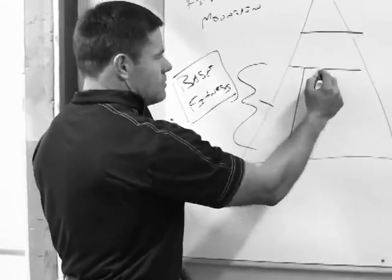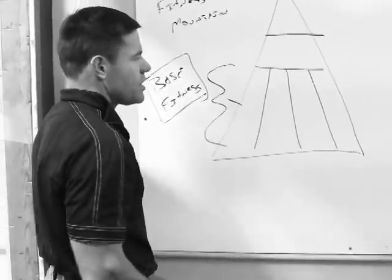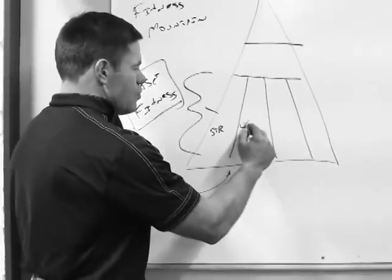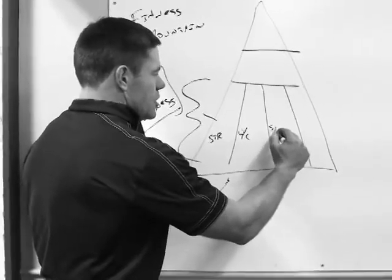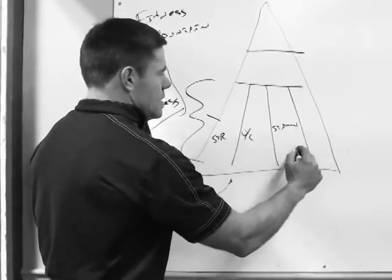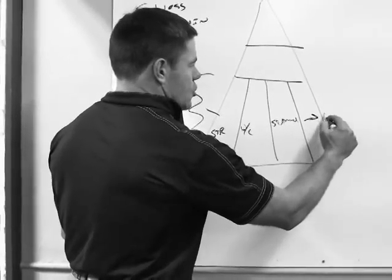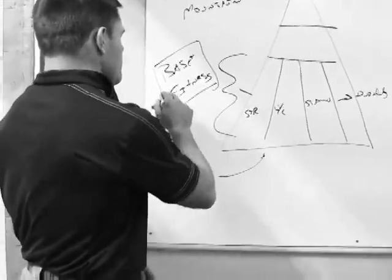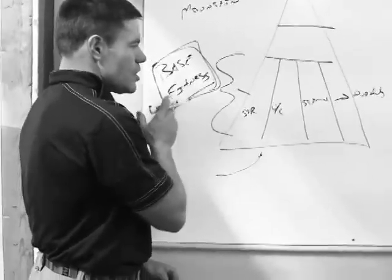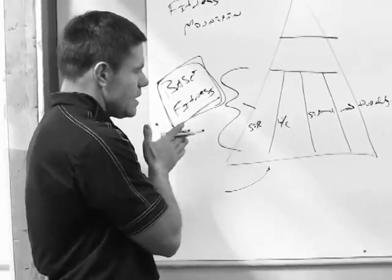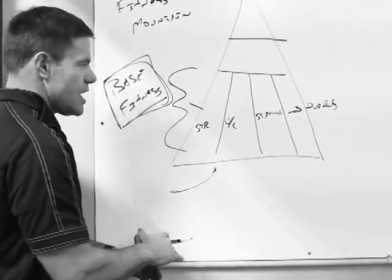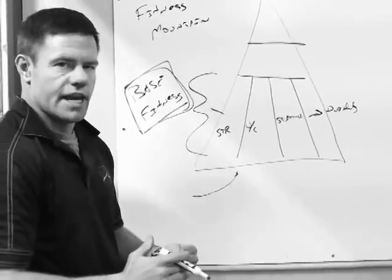When it comes to base fitness we have four different cornerstones. The first is strength, the second is work capacity, the third is stamina, and the fourth is durability. So when we're doing a base fitness cycle, we're cycling through these different cornerstones as we help to build the base fitness of that athlete.